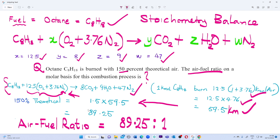Now let us not forget that our theoretical air has a percentage of 150%. From there we can deduce that 150% which is equivalent to 1.5 is multiplied by our calculated kilomoles of air, so that gives us 1.5 times 59.5, which gives us 89.25.